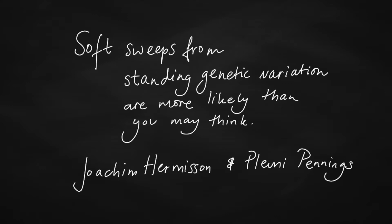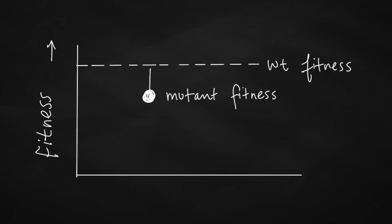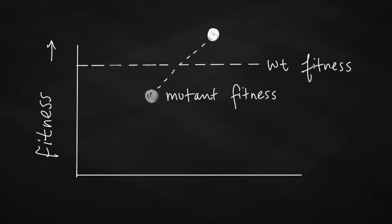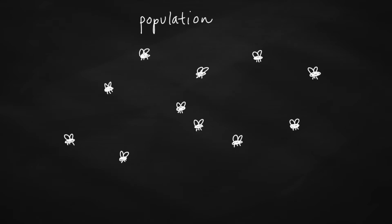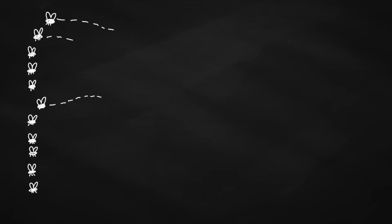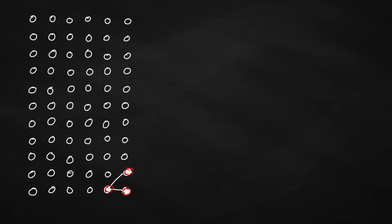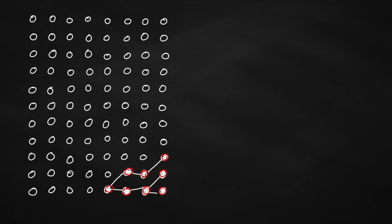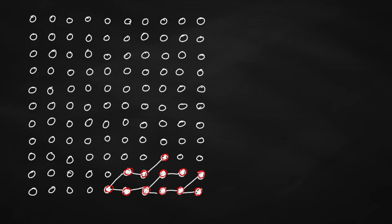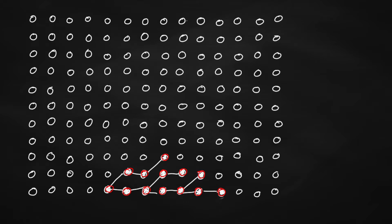We'll focus on a mutation that is initially less fit than the wild type — it comes with a fitness cost — but later the environment changes and the mutation becomes more fit than the wild type. If the mutation occurs, the mutant may reproduce and mutant offspring may be present in the population for a while, but after some time it most likely dies out again, since it is less fit than the wild type.